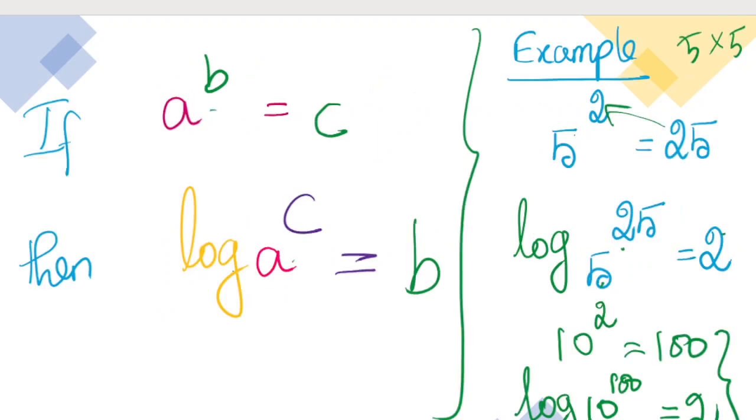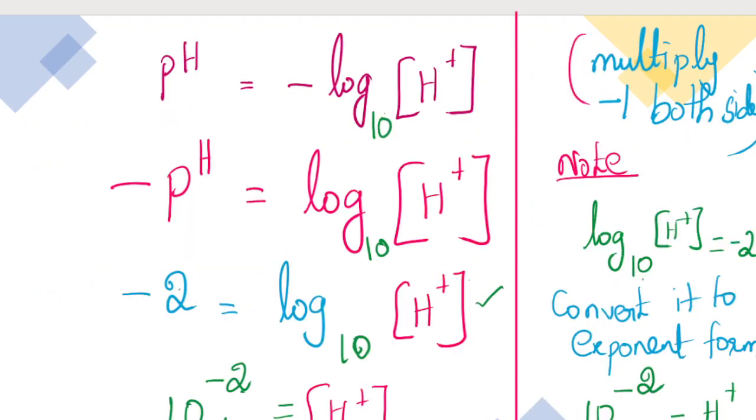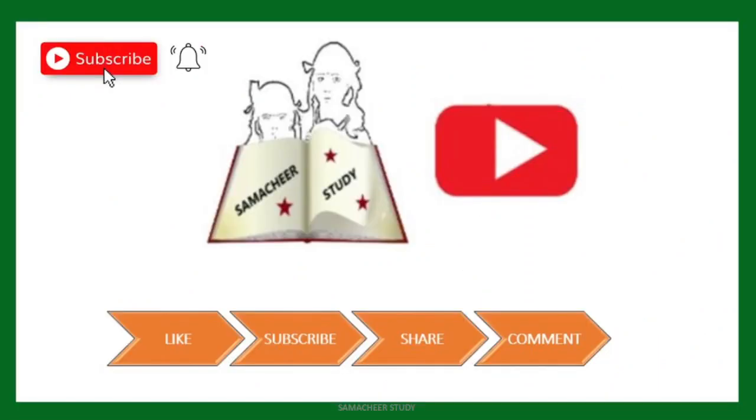So, once again, this is the exponent. Log is the difference. If you identify this, the problem is very easy to solve. Answer is 0.01 moles per liter. Okay, students. Hope you understand this concept. If you like this video, please subscribe and share it to your friends. Thank you so much for watching.